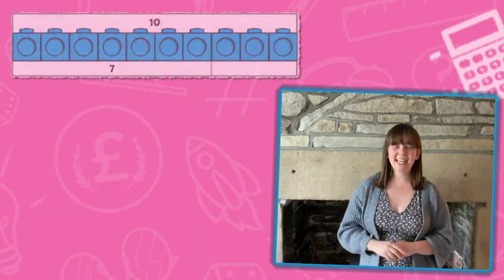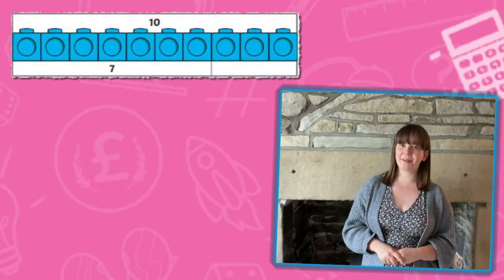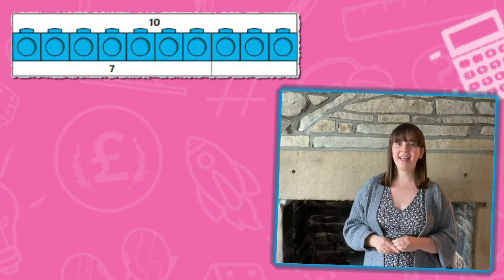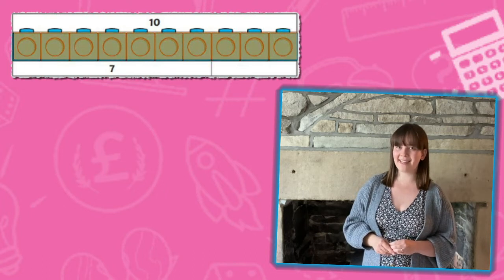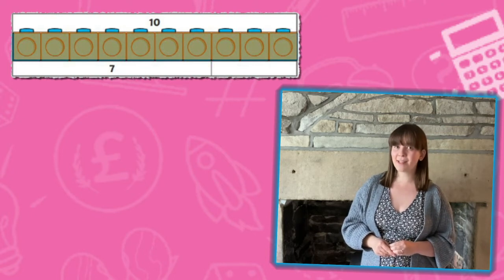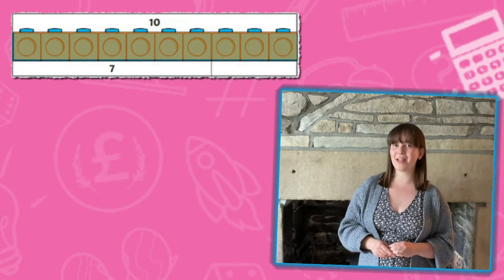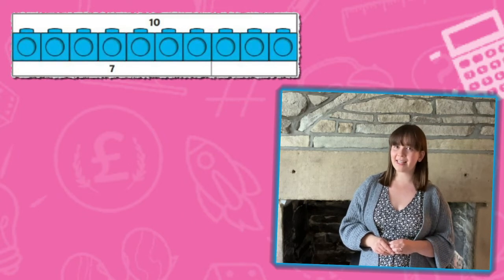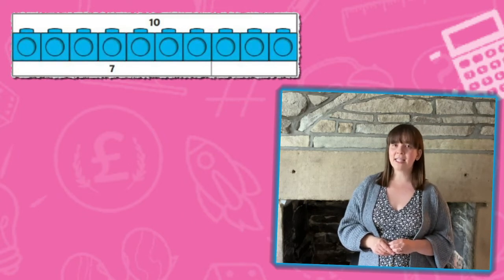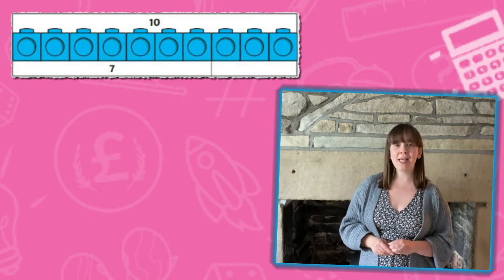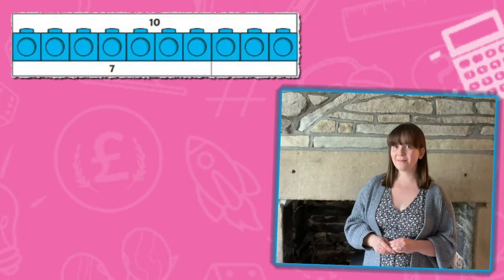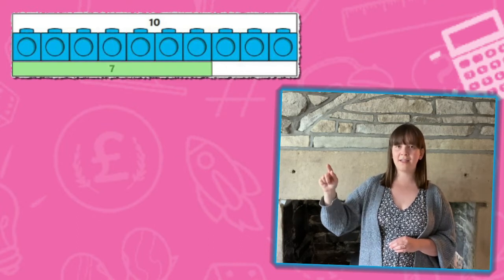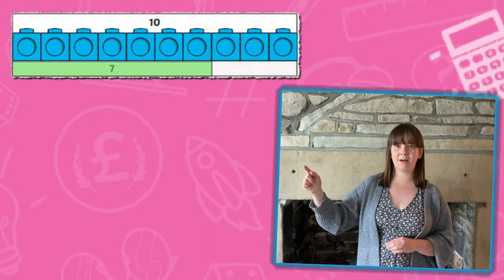Let's take a look at an example. In this one here, the whole bar is worth 10 — that's the total number that we're trying to find. The second bar underneath is split into two unequal parts. We can see that the first part is much longer than the second part.